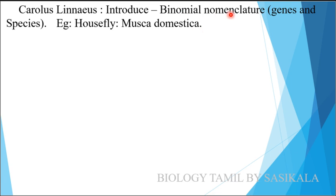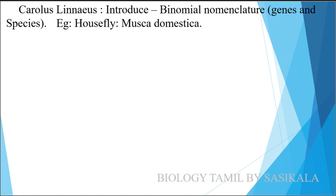Binomial nomenclature means one organism has two names: a Genus name and a Species name. For example, Musca domestica — Musca is the genus name and domestica is the species name. Genus and species together form the binomial nomenclature. Carolus Linnaeus introduced the binomial nomenclature method.